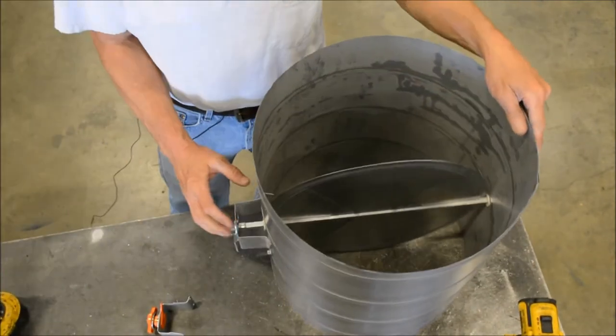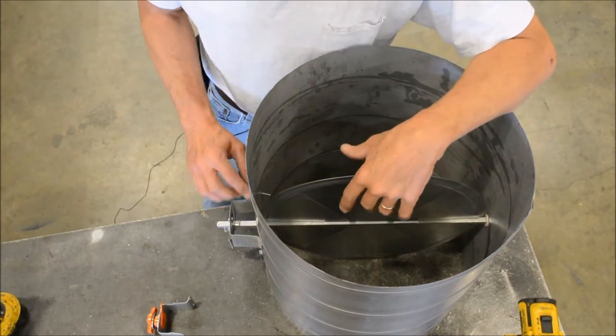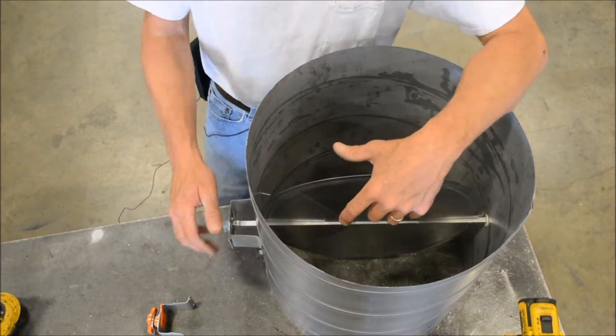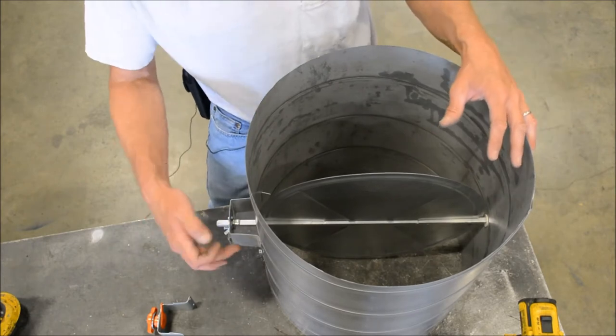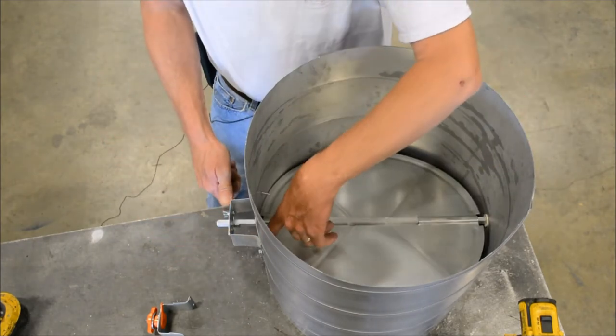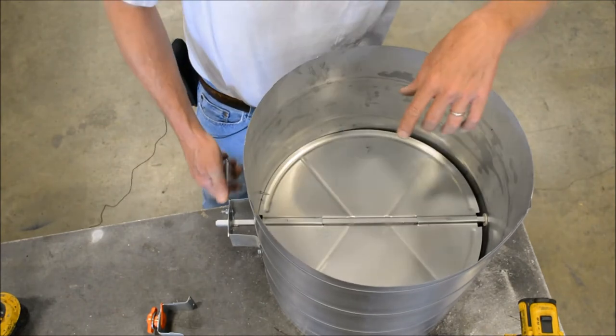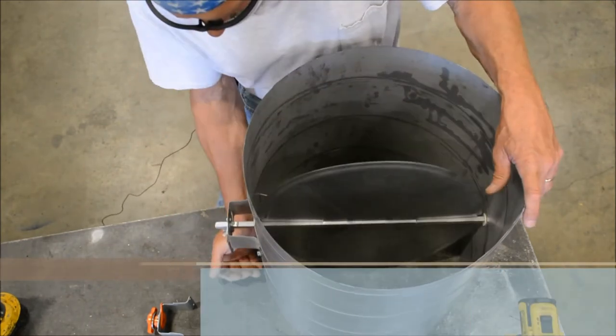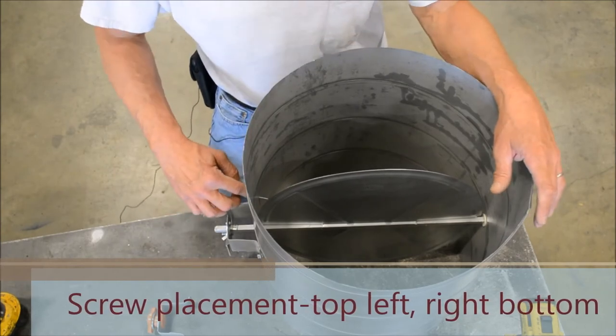Okay, why we did that was because whenever the blade closes, if you have the screws here and here, your handle turns, your screw hits. So we install them at the opposite corner, or with the blade open that'll be to the left top, right bottom.